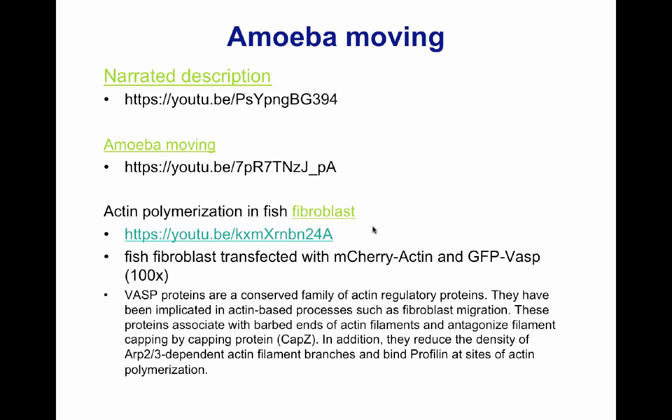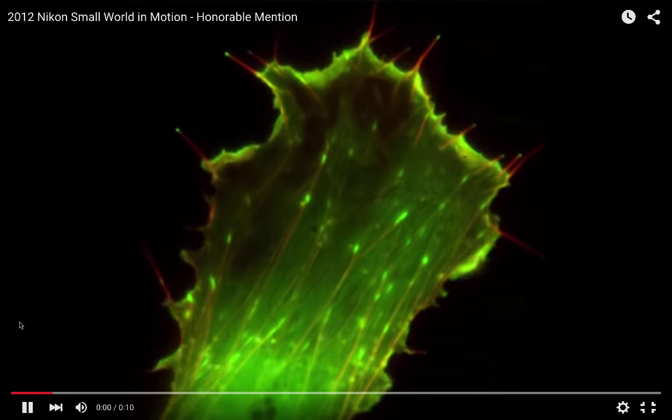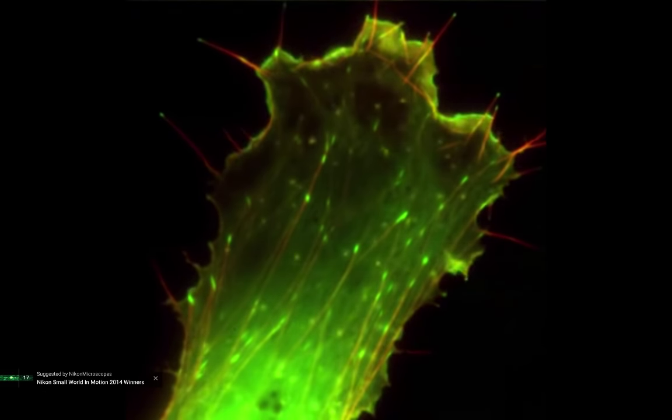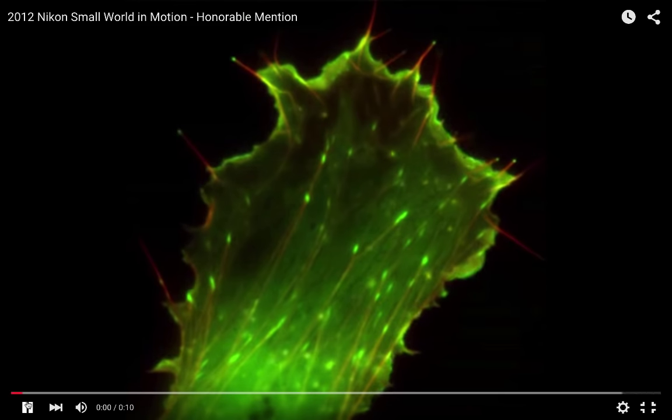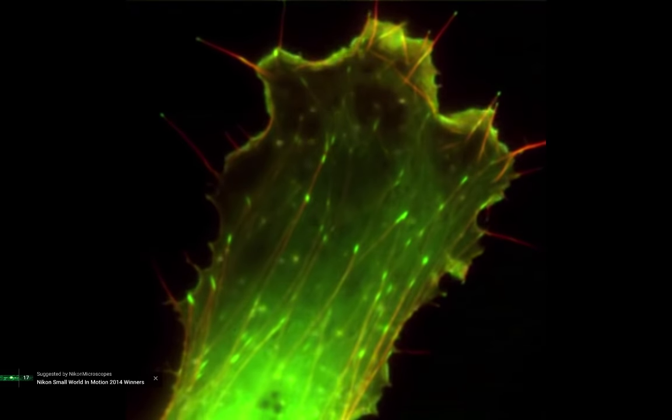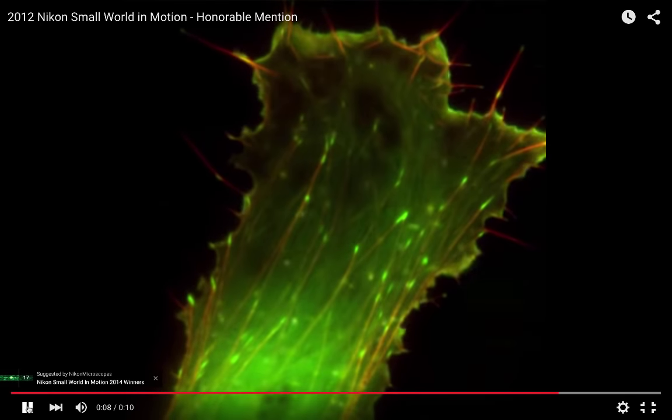Last but not least, in this very short video I want to show how depolymerization of actin is happening in a fish fibroblast — the same process occurring in unicellular microorganisms. We have two proteins: actin, marked by the fluorescent protein M-Cherry, and VASP, which is GFP-labeled. VASP is a conserved active regulatory protein implicated in active movement, such as fibroblast migration. They are associated with actin filaments and prevent the formation of capping protein. Notice the extension of green (VASP) and red (actin) — active actin polymerization happening in real cells.